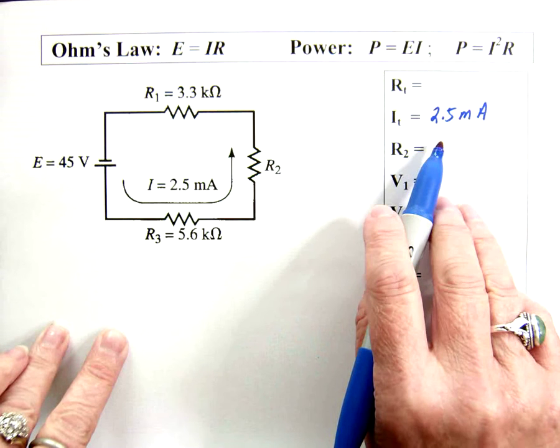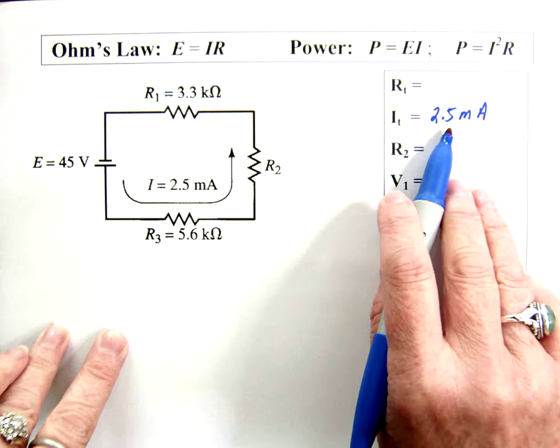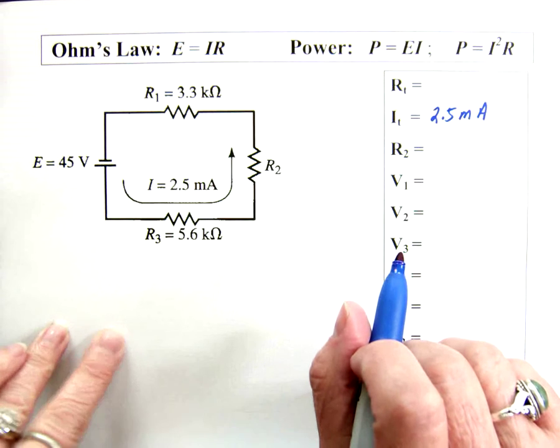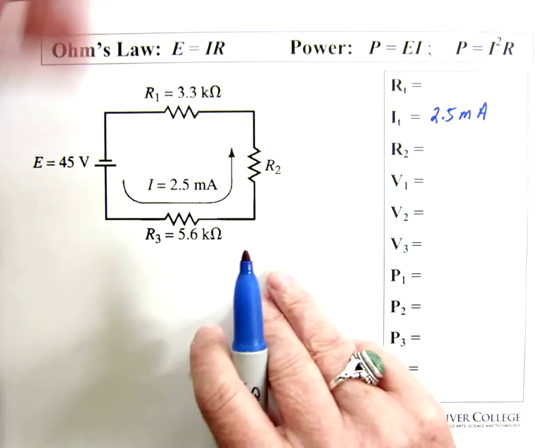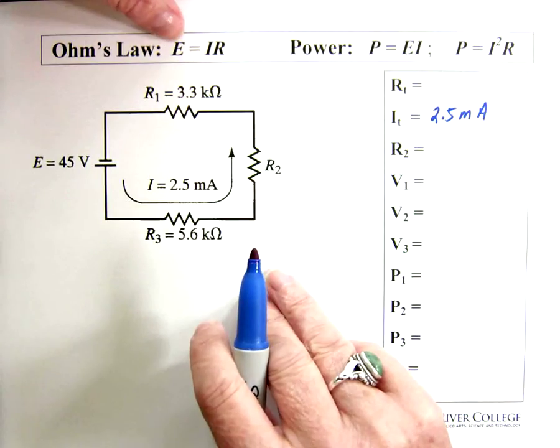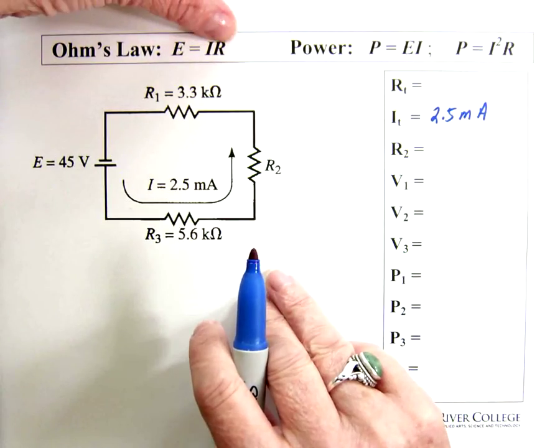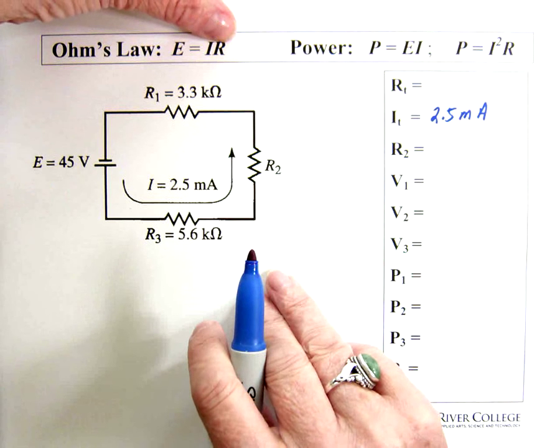Okay, where were we? Total current 2.5 milliamps. We also have total voltage. So since we have voltage and current, we can solve for the total resistance in the circuit.